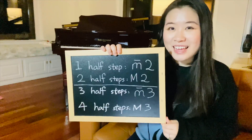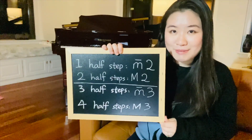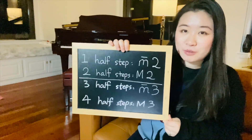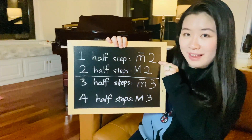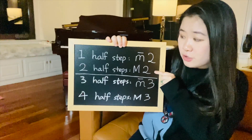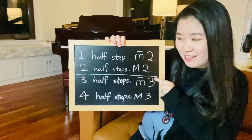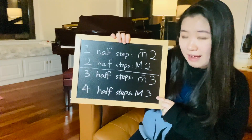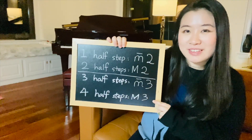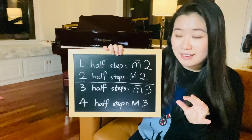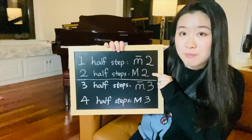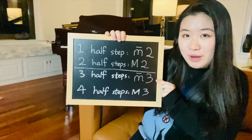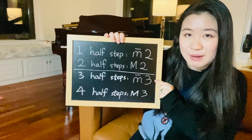For seconds and thirds, it's actually much faster to just count how many half steps there are between the two notes. Don't bother with the whole key thing. For seconds: if there's only one half step, it's a minor second; if there are two half steps or one whole step, it's a major second. For thirds: if there are three half steps, it's a minor third; and if there are four half steps or two whole steps, it's a major third. If anything abnormal happens — for example, a second bigger than two half steps — something augmented is going on. For thirds, if you have fewer than three half steps, go with diminished.